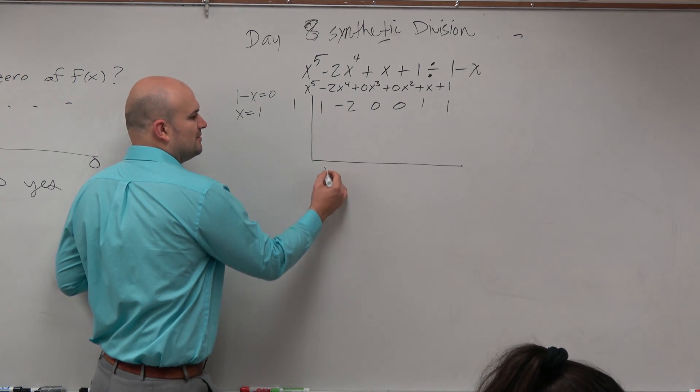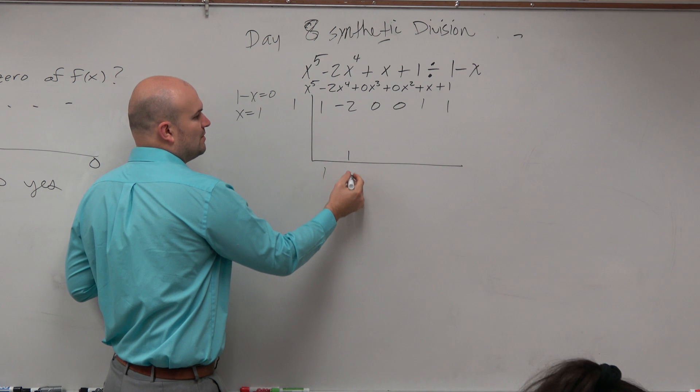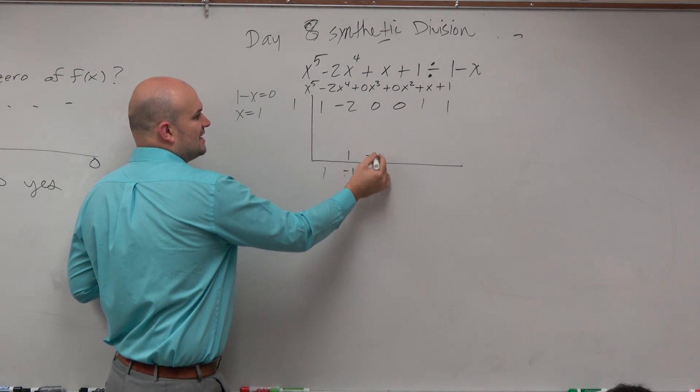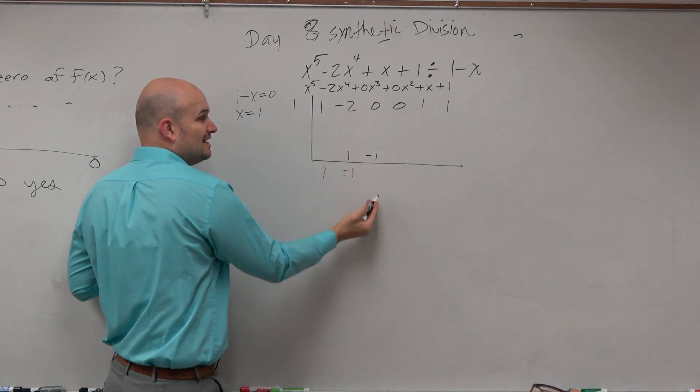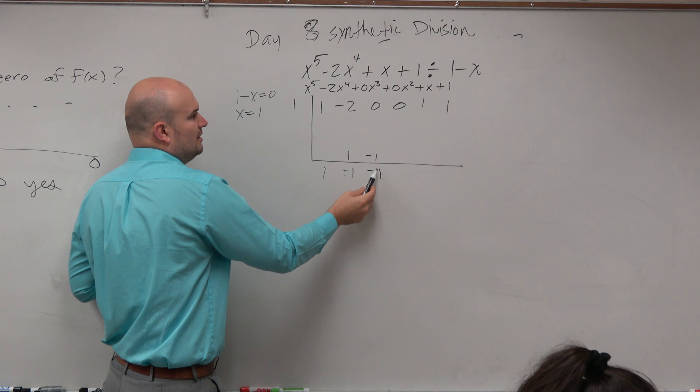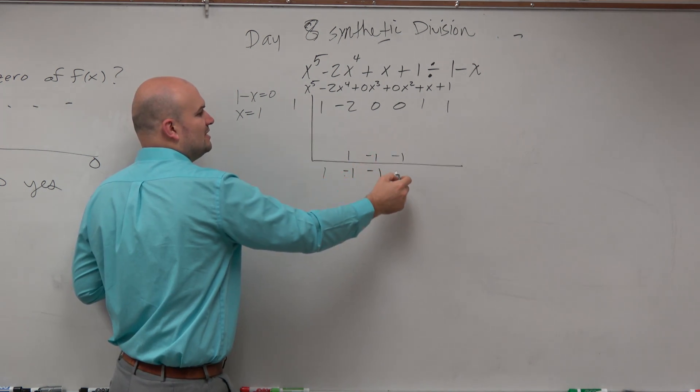So again, bring down the first one, which is your freebie. 1 times 1 is going to be 1. Negative 2 plus 1 is negative 1. Negative 1 times 1 is negative 1. Remember, we add on the vertical and multiply on the diagonal. 0 plus negative 1 is negative 1. Negative 1 times 1 is negative 1. 0 plus negative 1 is negative 1.